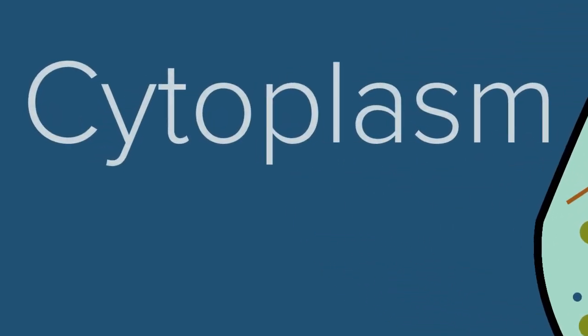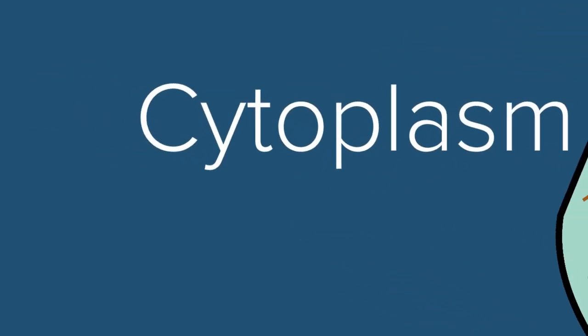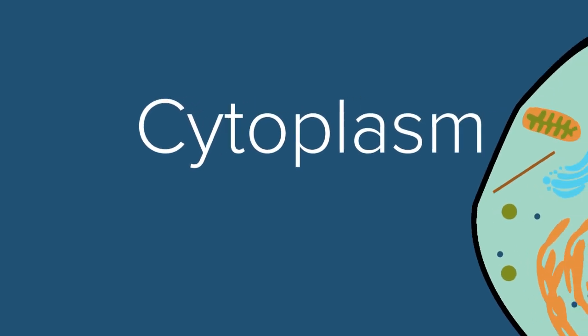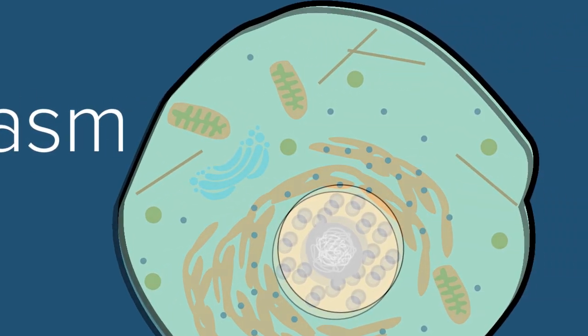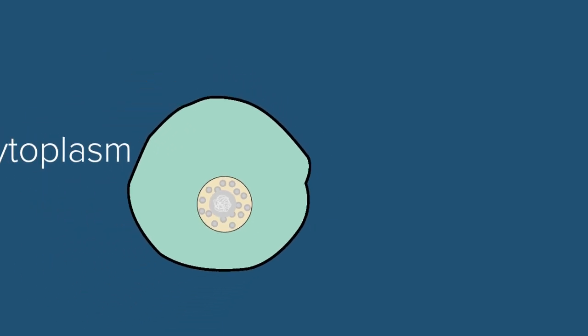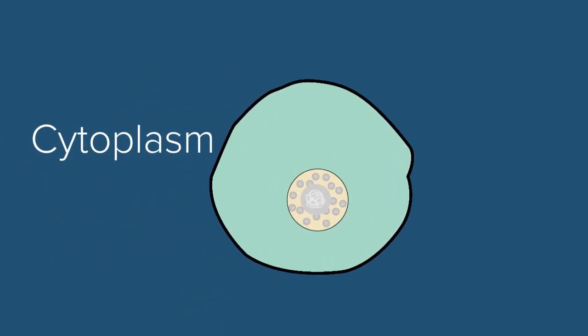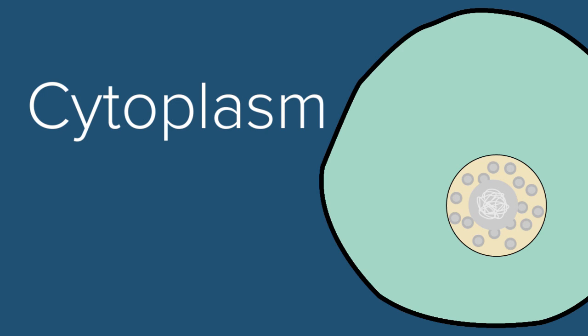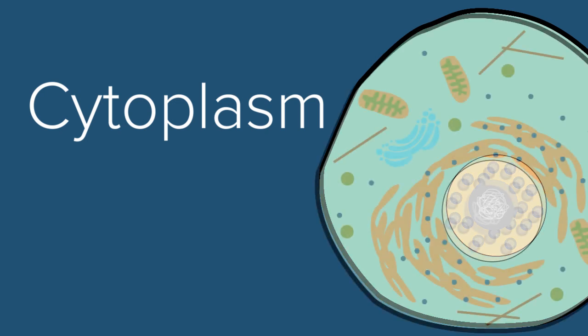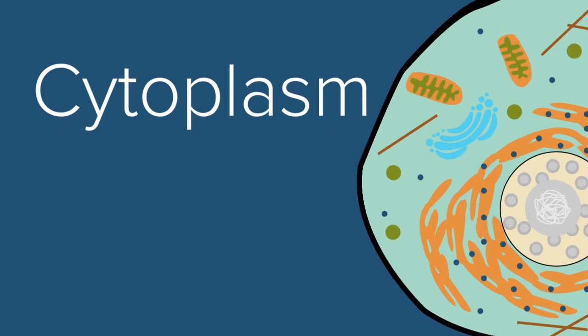The cytoplasm is a portion of the cell that contains everything between the outer plasma membrane and the nuclear envelope. All of the structures inside the cell are sitting in a jelly-like fluid called the cytosol.